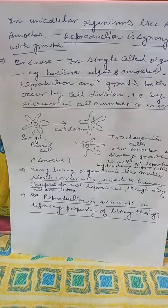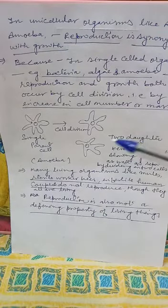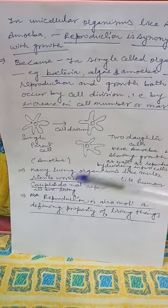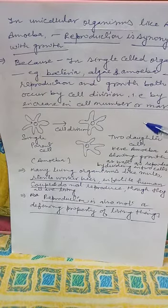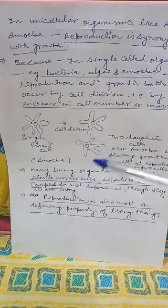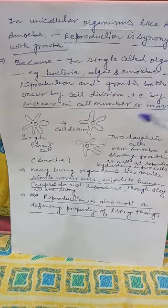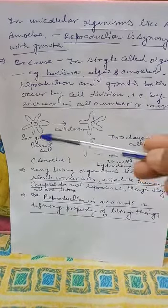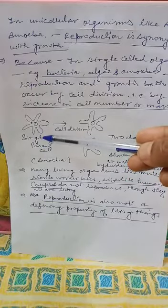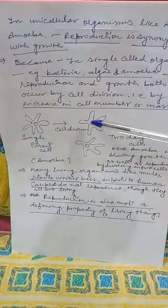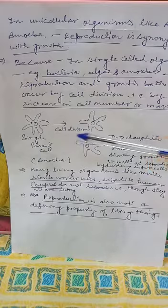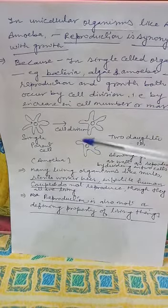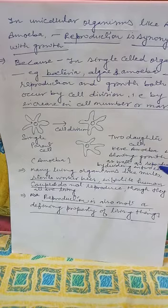Reproduction is synonymous with growth because in single-celled organisms — for example, bacteria, algae, and amoeba — reproduction and growth both occur by cell division, that is by increase in cell number or mass. You can understand this with the help of a diagram. Here, amoeba's single-cell body divides into two daughter cells by cell division.